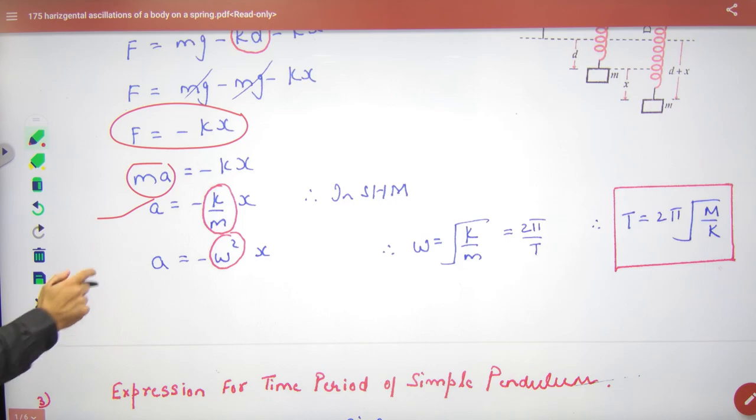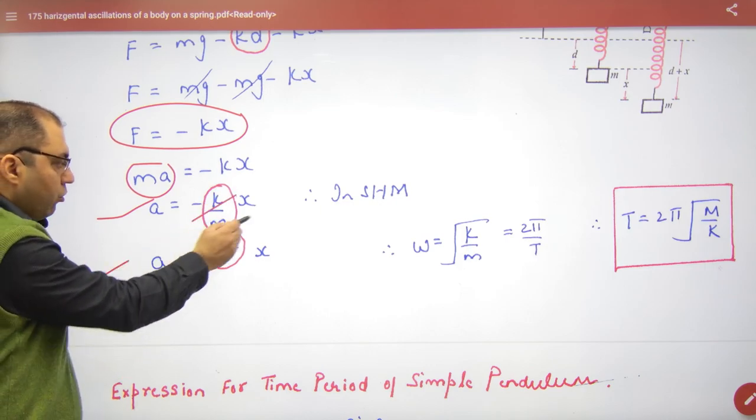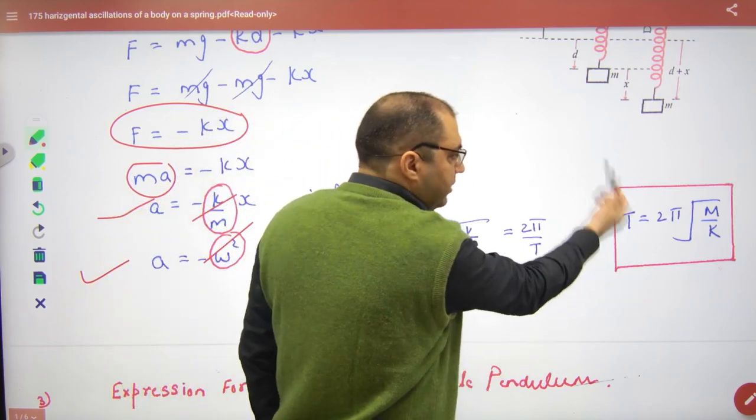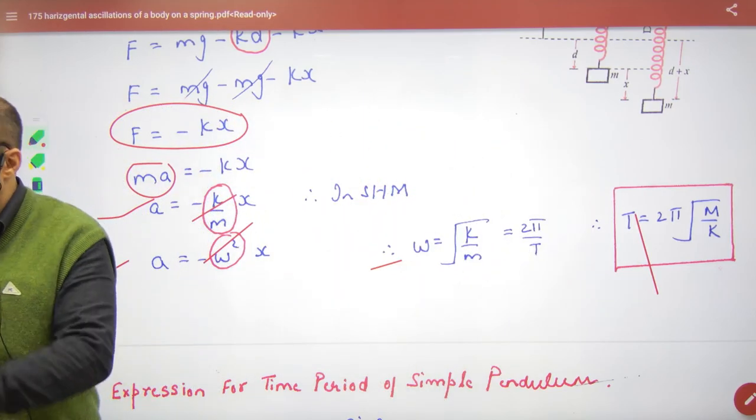This is SHM. Write the SHM equation. Compare them both. Omega will come out. Omega is 2π by T. Time period will come from here. Same answer. And this is proved.